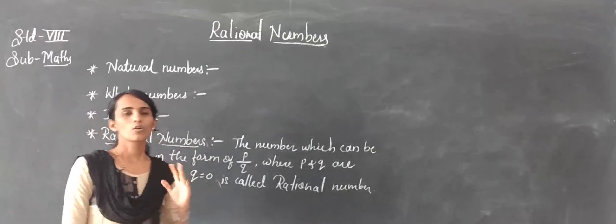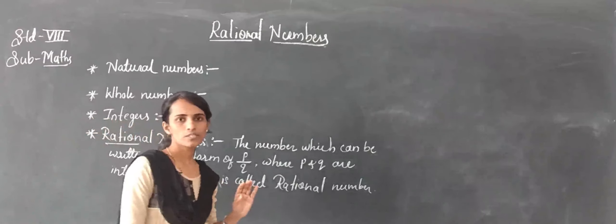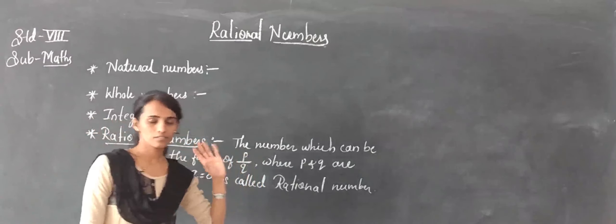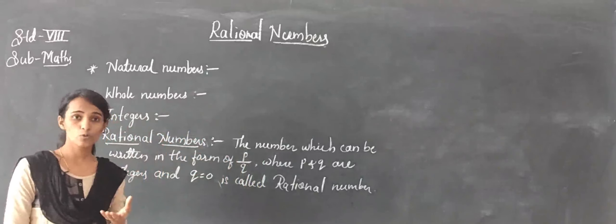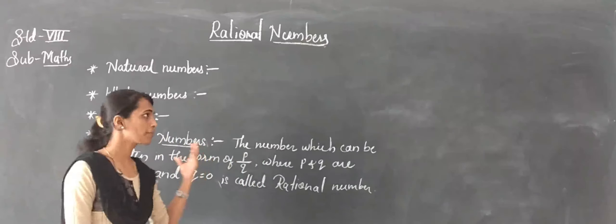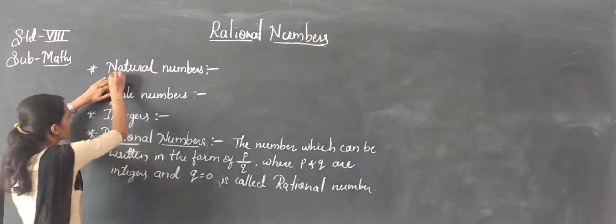Numbers: all digits 0 to 9 we call as numerals, and one or more numerals together we call as numbers. So then, what is the natural number?